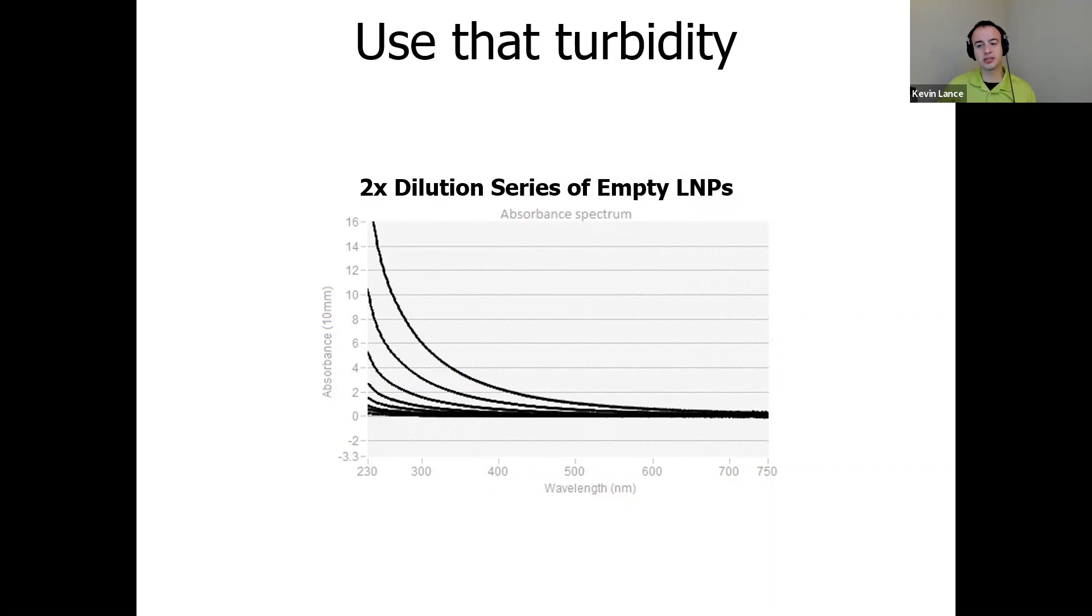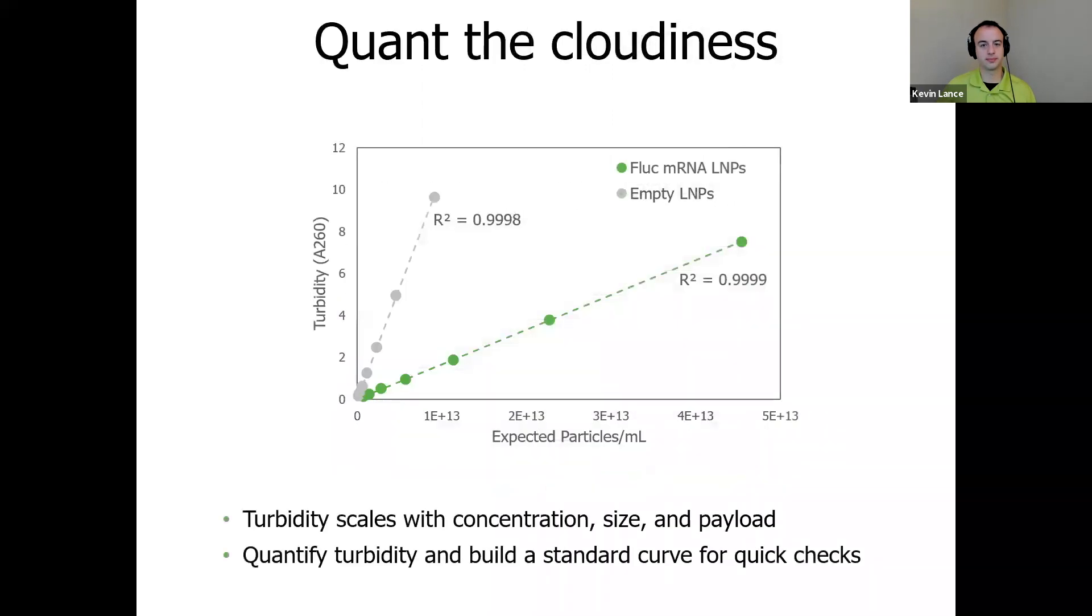Here we're looking at turbidity signal from a 2x dilution series of empty LNPs, where the highest concentration is at the top of the graph with the highest signal. So you can see as the sample gets diluted, every step the turbidity decreases.